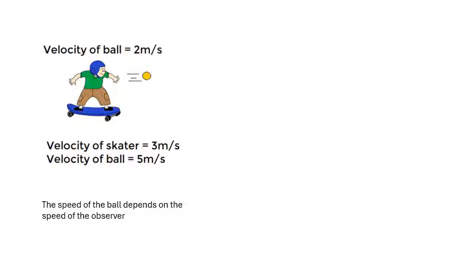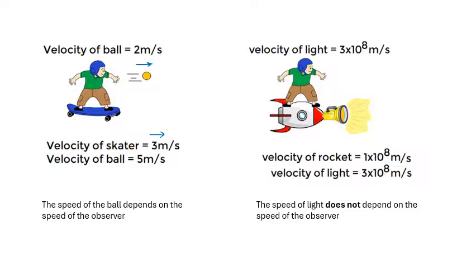If you throw a ball at 2 m/s from a skateboard traveling at 3 m/s, the ball's speed relative to an external observer is 5 m/s. Light doesn't work like that. Whether a torch is shone by someone on a skateboard or observed externally, the speed of light is 3×10⁸ for both. The speed of light does not depend on the speed of the observer — an amazing idea.